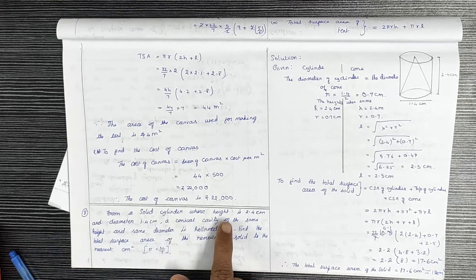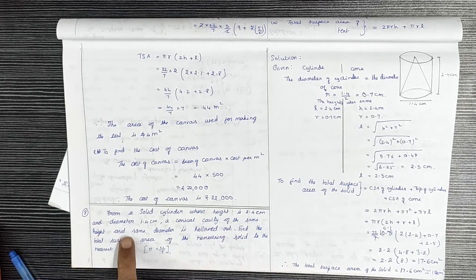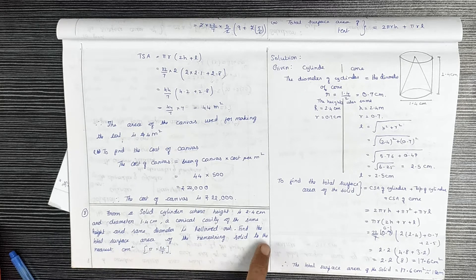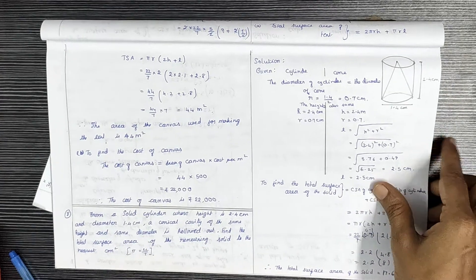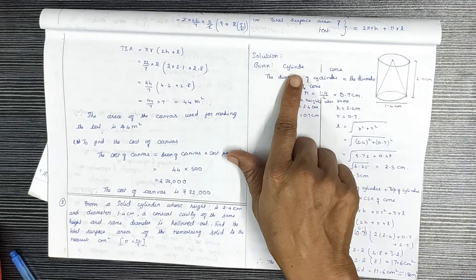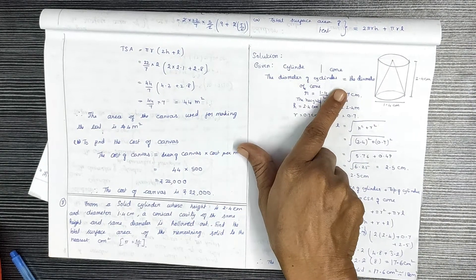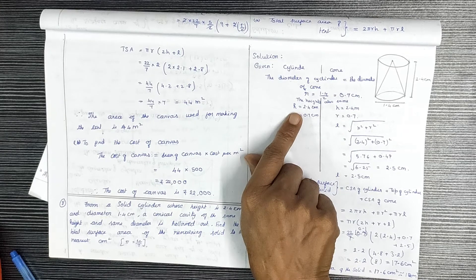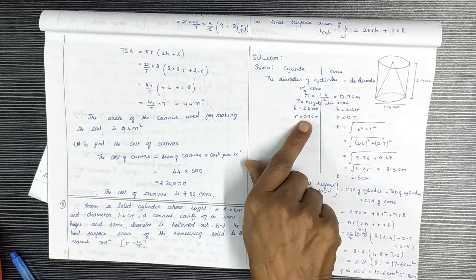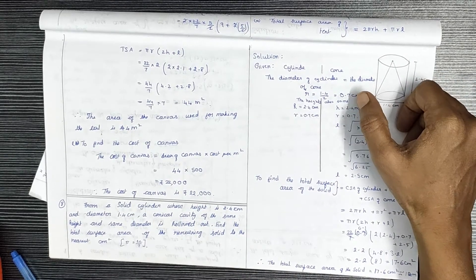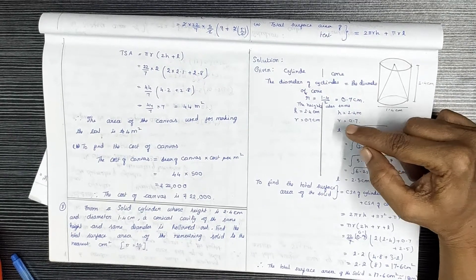Question 8: From a solid cylinder whose height is 2.4cm and diameter is 1.4cm, a conical cavity of the same height and same diameter is hollowed out. Find the total surface area of the remaining solid. The radius is equal to 0.7cm and height is 2.4cm.